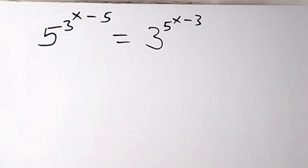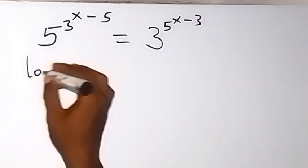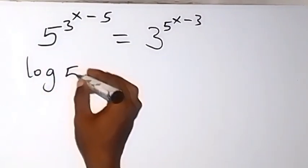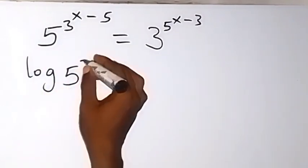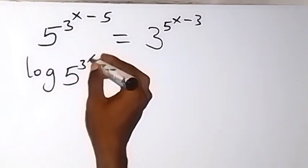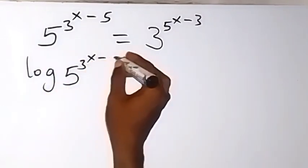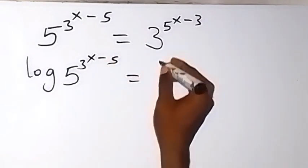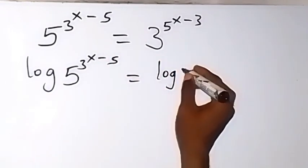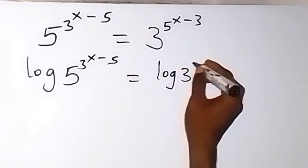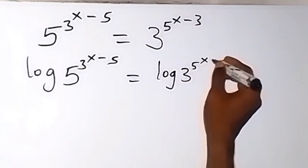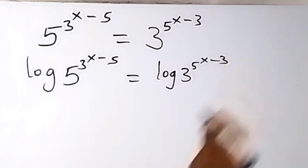Now, let's take the log on both sides. We have log of 5 raised to the power 3, then raised to the power x minus 5, equals to log of 3 raised to the power 5, then raised to the power x minus 3.